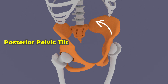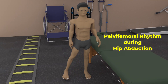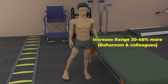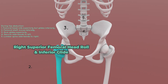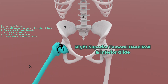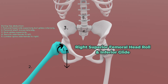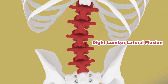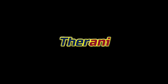The pelvifemoral rhythm can also occur during hip abduction, as it increases the range through which the foot can be moved in space by approximately 30–46% more. During right hip abduction, there is a superior femoral head roll but an inferior femoral head glide. As it reaches its maximum allowable range of abduction, the right pelvis starts to tilt laterally, or hike. As the maximum allowable hike is reached, the lumbar spine laterally flexes to the right.